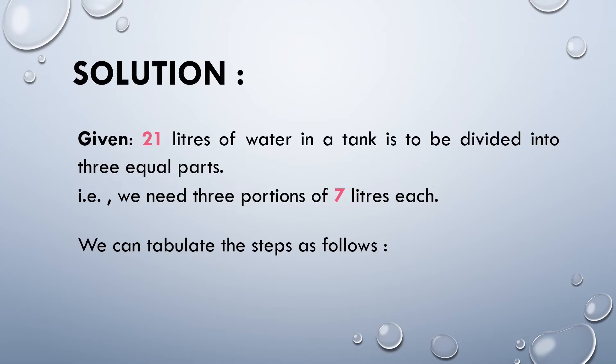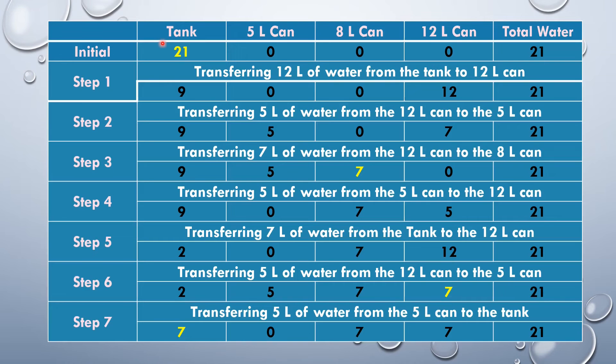We can tabulate the steps as follows. Initially the tank will have 21 liters of water and all the 3 cans would be empty. Step 1: Transfer 12 liters of water from the tank to the 12 liter can.